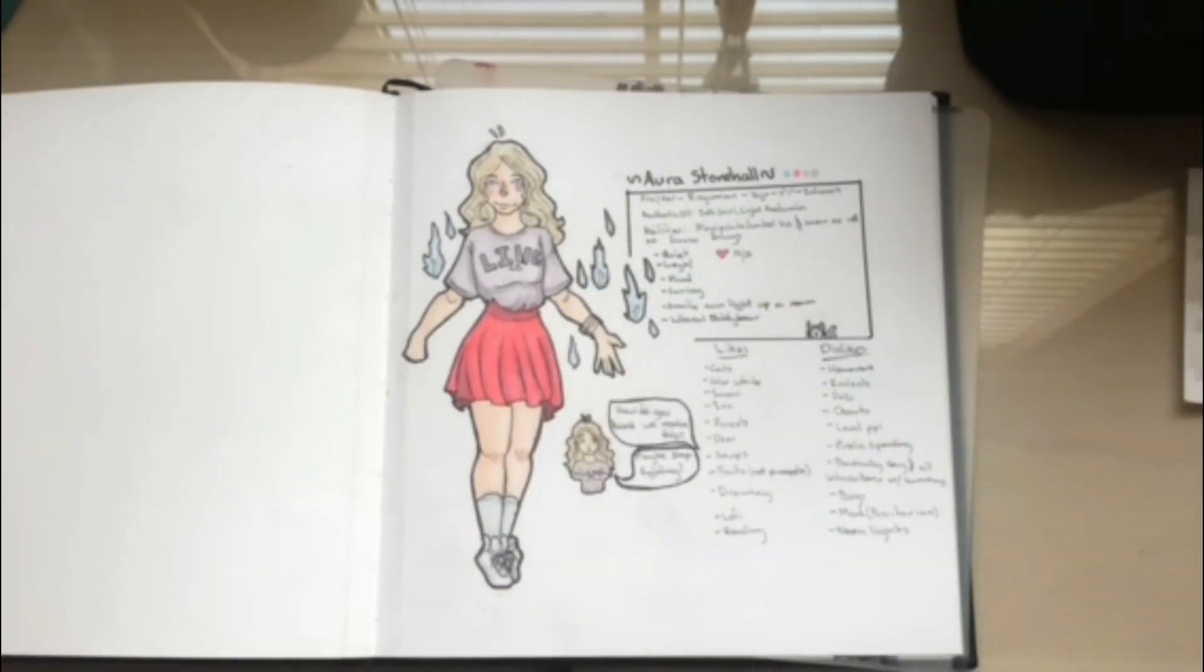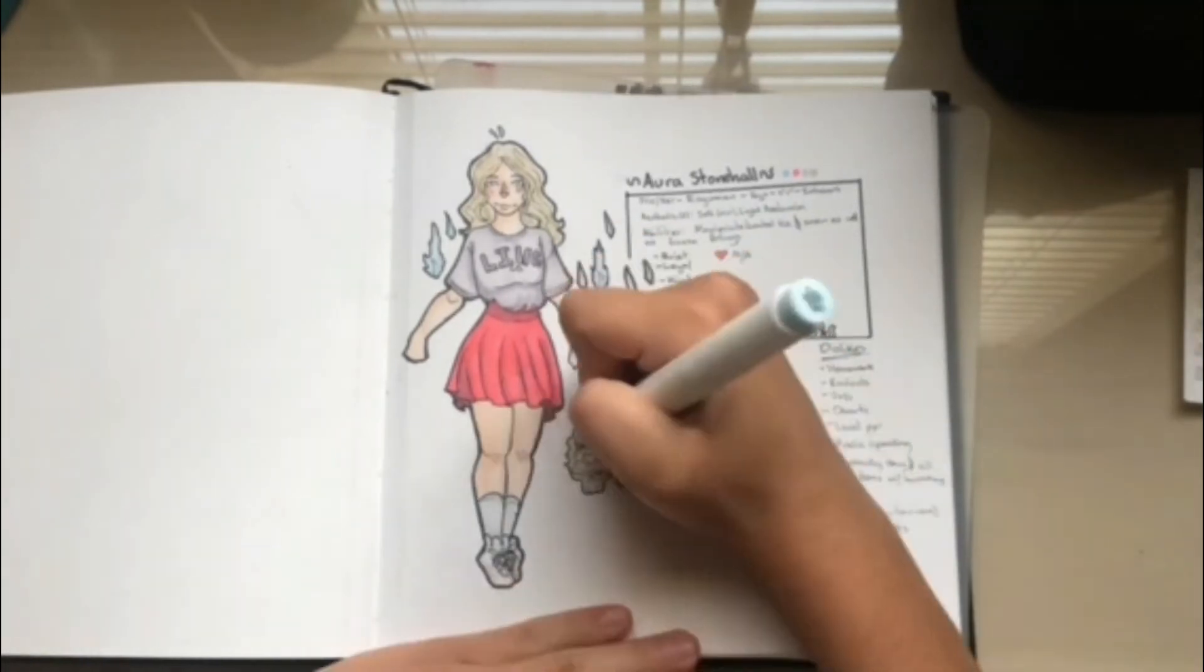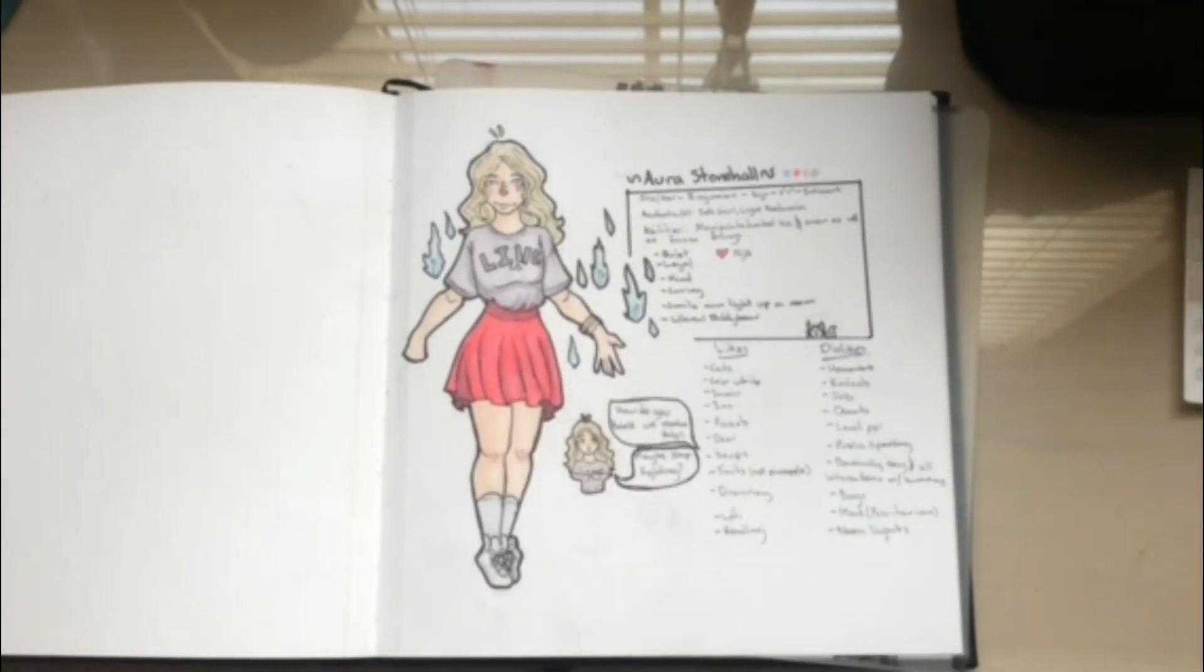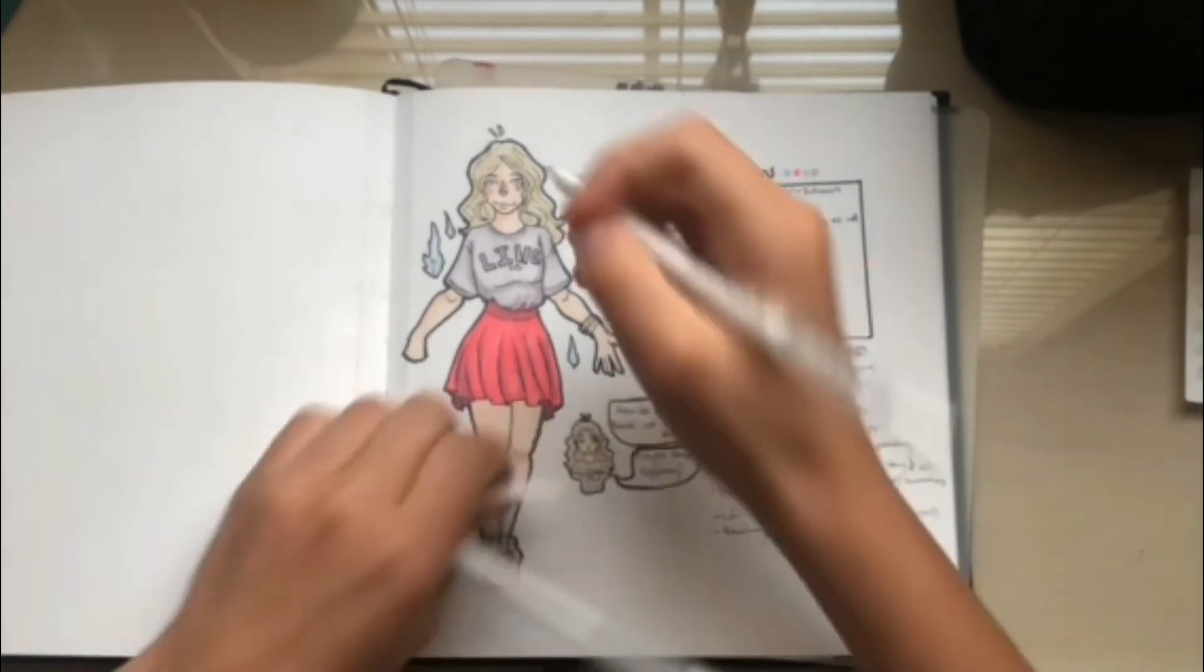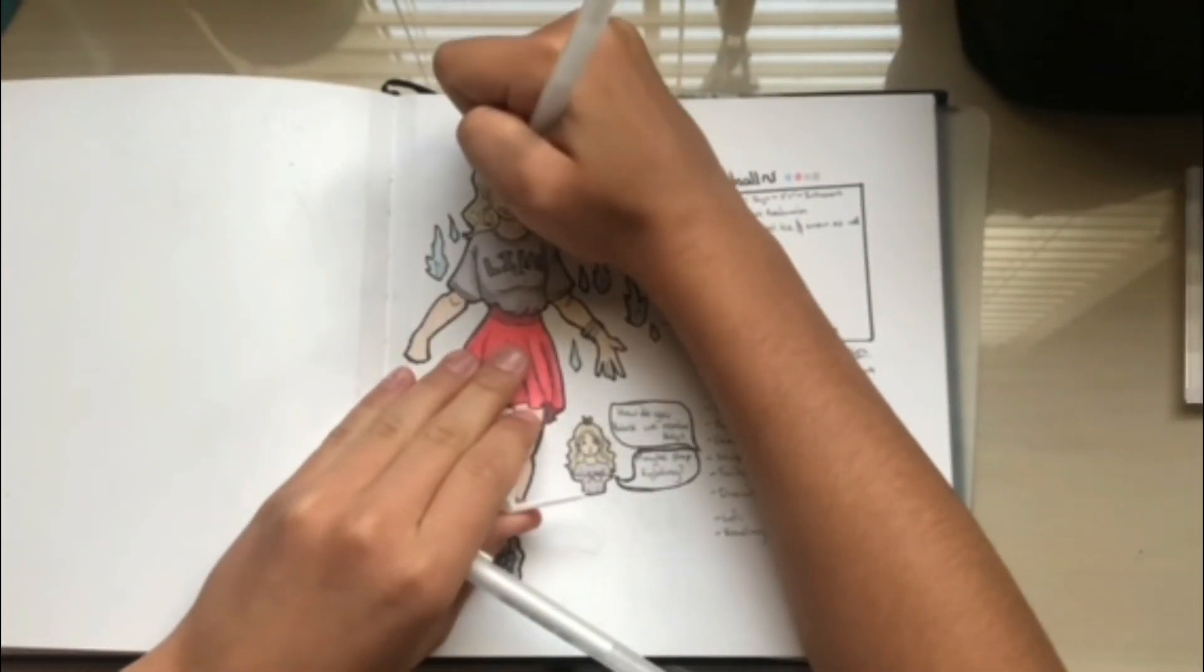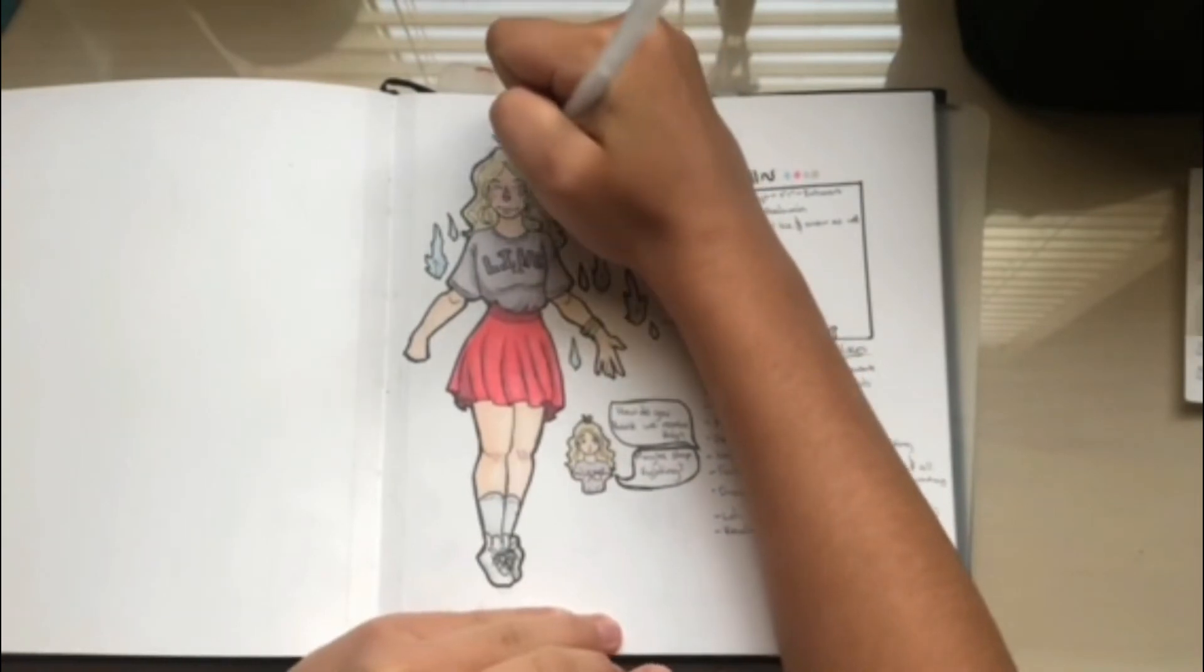Another thing I have on this character sheet is the biggest regret and deepest secret of all of my OCs, but Aura does not have one yet, because Aura, I feel like, wouldn't really have any regrets, because she's not done anything bad in her life. But, of course, that can always change. Again, I'm still fleshing out these characters.